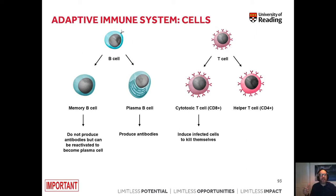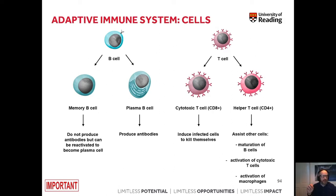Cytotoxic T cells induce infected cells to kill themselves. However, you need to distinguish between those cells and natural killer cells, which are part of the innate immune system — we will look at those in detail later on. Helper T cells assist other cells: they assist B cells in maturation, contribute to activation of cytotoxic T cells, and also contribute to activation of macrophages. Importantly, there is also another subtype of T cells called memory T cells, meaning our immune system can also remember infections using T cells.